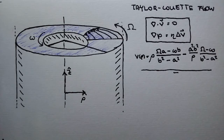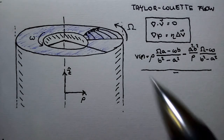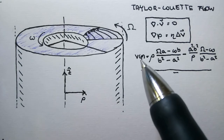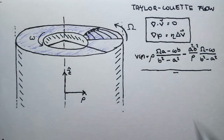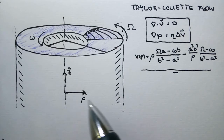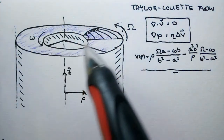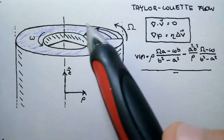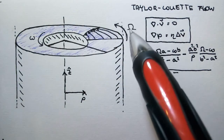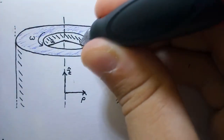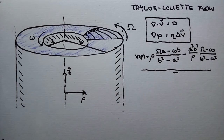Hello and welcome to our next video. Today I will show you how to derive the Taylor-Couette flow formula — the relation for velocity of a fluid as a function of ρ, the distance from the center, for fluid moving between two rotating cylinders. The first cylinder rotates with angular velocity ω and the second with Ω; the radii are a and b respectively. Let's derive this formula.